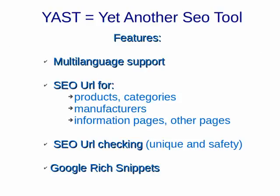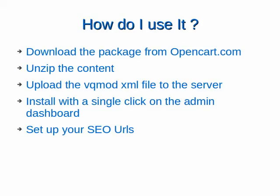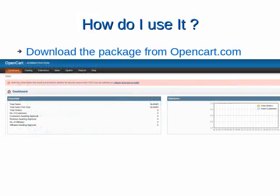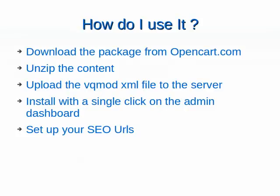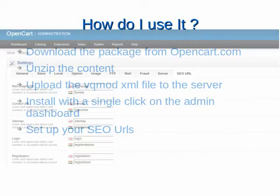The Yast extension provides metadata information about products in the web shop and it uses Google rich snippets. Installing Yast is a simple process. Download the package from OpenCard.com and unzip the content. Upload the XML file to the server, login to the admin page and install with a single click on the admin dashboard. See the link inside the warning message and finally set up your URLs.